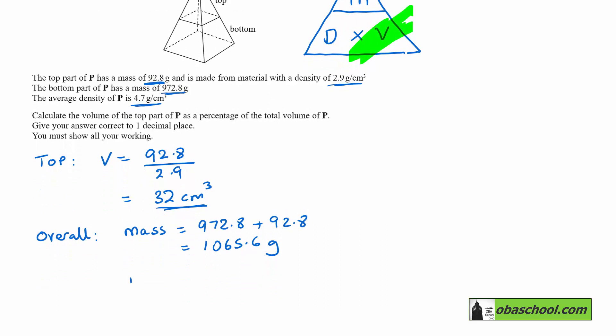The overall density we are told in the question is 4.7 grams per cubic centimeter and therefore the overall volume is 1065.6 divided by 4.7 and that comes out to 226.723 and so on.